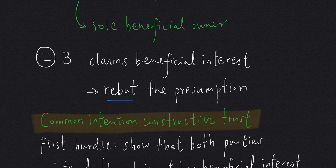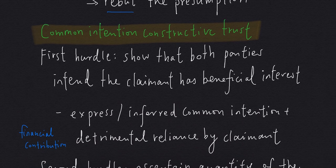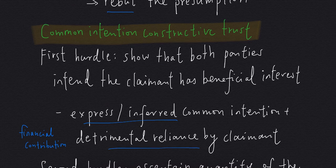B can do so by overcoming two hurdles. For the first hurdle, B has to show that both parties intend him to have some beneficial interest in the property. So B has to show express or inferred Common Intention as well as detrimental reliance by him.